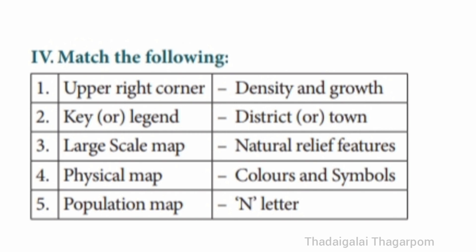Roman No. 4: Match the following. 1 – Upper right corner: N letter. 2 – Key or Legend: Colors and Symbols. 3 – Large scale map: District or Town. 4 – Physical map: Natural relief features. 5 – Population map: Density and Growth.